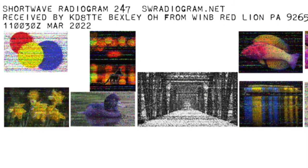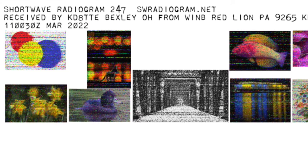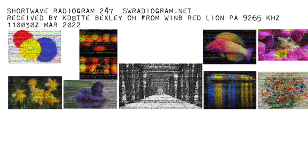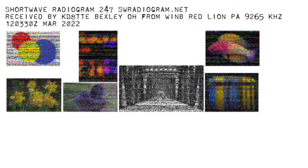Here's an example from Shortwave Radiogram program 247. I received three transmissions of the program. My first reception was from WINB in Red Lion, Pennsylvania, via 9 megahertz on the 11th of March at 0030 Zulu — or in Eastern Standard Time, 7:30 in the evening on the 10th of March. My station decoded nine images. The next reception was from the same station on the same frequency, but three hours later in the evening. Reception quality was not as good, and I could decode only seven of the nine images that I received earlier.